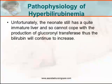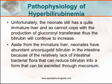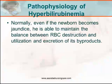Unfortunately, the neonate has a quite immature liver and cannot cope with the production of glucuronyl transferase, so the bilirubin will continue to increase. Aside from the immature liver, neonates have abundant unconjugated bilirubin in the intestine because of a relative lack of intestinal bacterial flora that can reduce bilirubin into a form that can be excreted. So normally, even if the newborn becomes jaundiced, he is able to maintain a balance between red blood cell destruction and the utilization and excretion of its by-products.